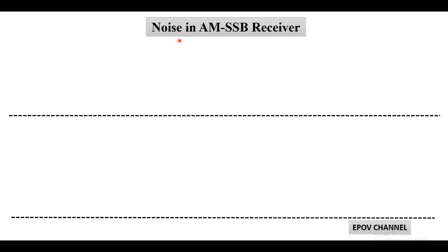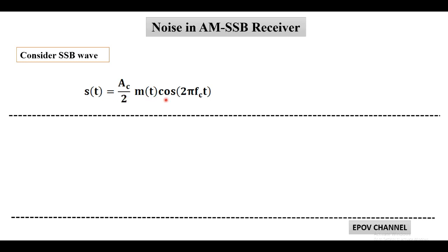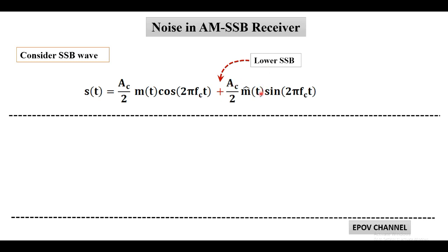Welcome once again. In this session, we are going to discuss noise performance in SSB receiver. First we consider an SSB wave which includes only the lower single sideband, and its expression s(t) equals ac/2 · m(t)·cos(2π f_c t) plus ac/2 · m̂(t)·sin(2π f_c t). The first term is called the in-phase component and the second term is called the quadrature component. The plus sign between the two terms represents that the lower single sideband is retained while the upper single sideband is filtered out. This wave is also called amplitude-modulated single sideband suppressed carrier wave. The generation of SSB has already been explained in detail in previous video lectures.